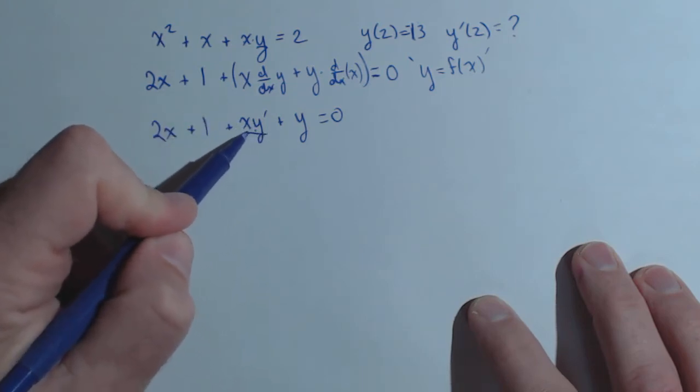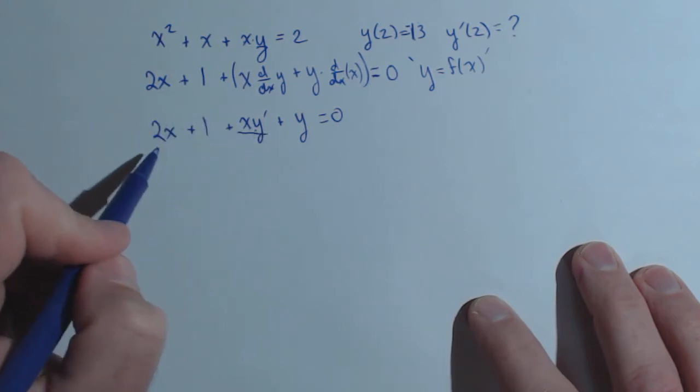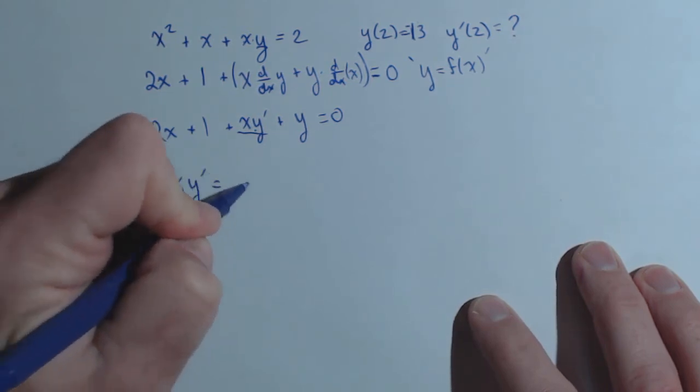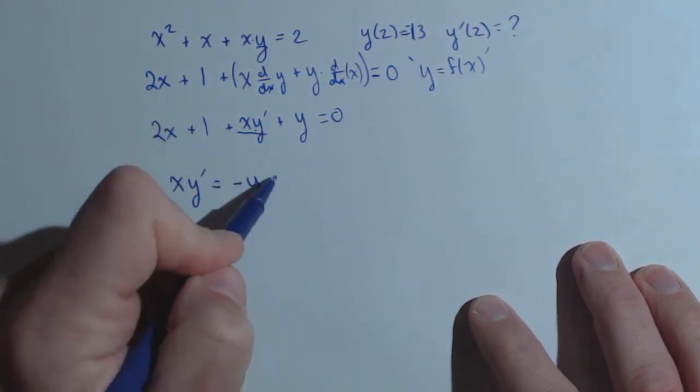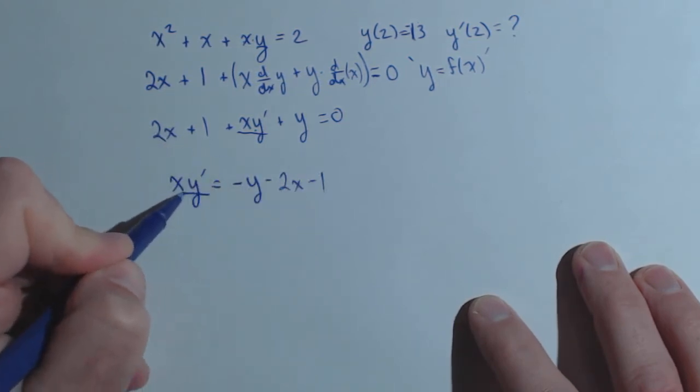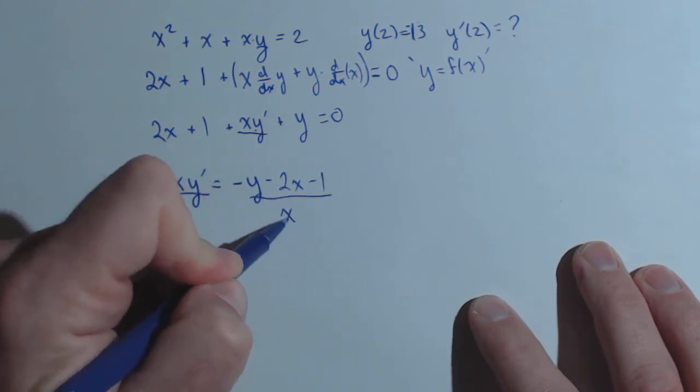So we're going to get y prime, any term with y prime on it on a side by itself, and all the others are going to the other side. So I'm going to leave x y prime on this side, and I'm going to subtract off y minus 2x minus 1, and we'll divide both sides by x.